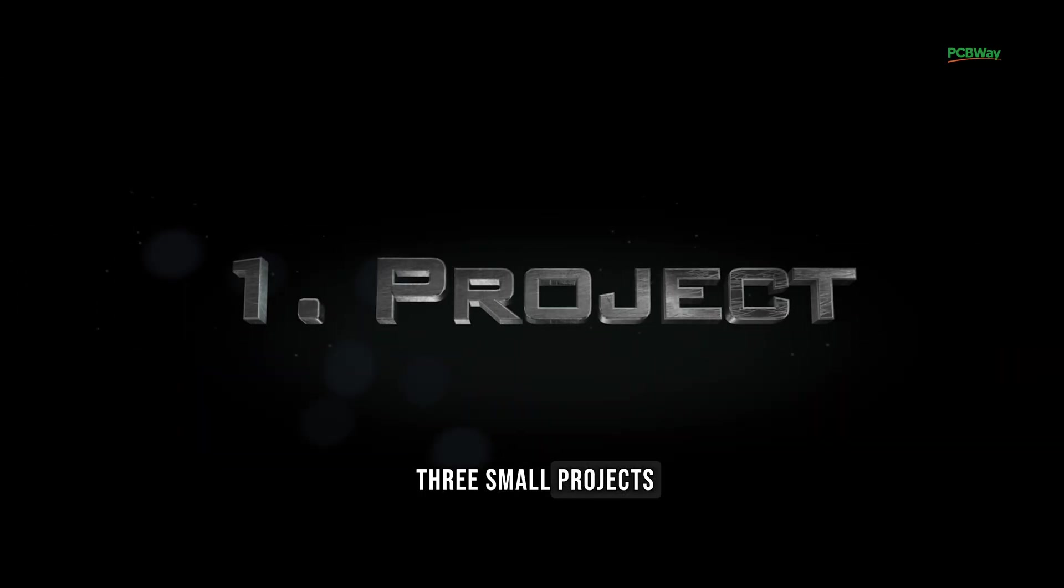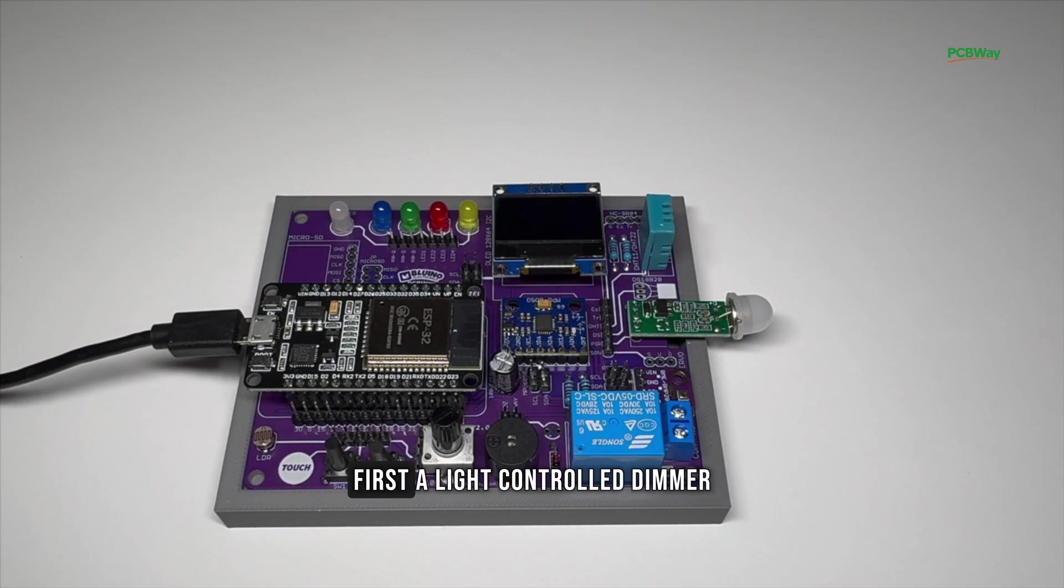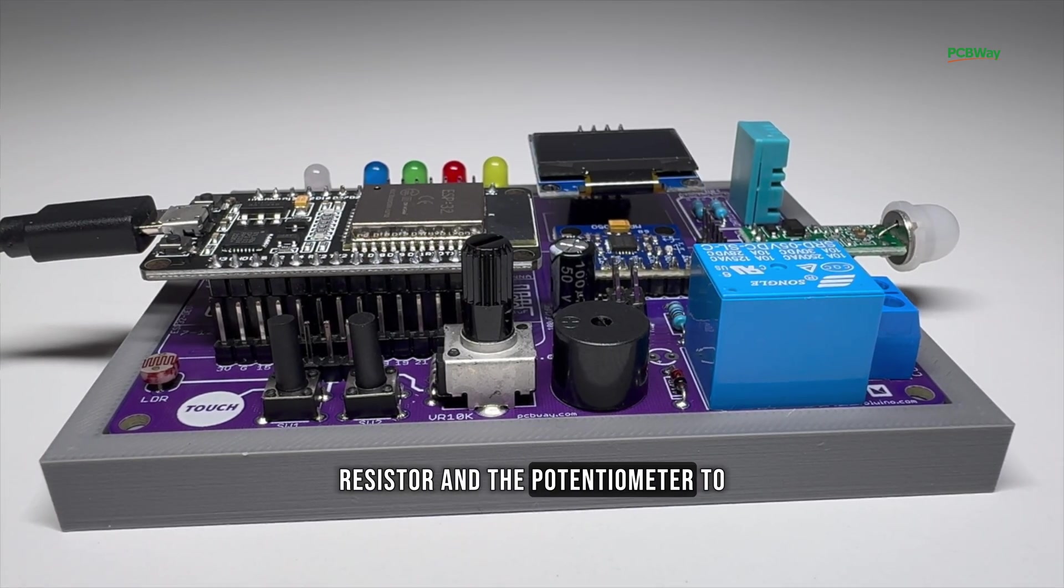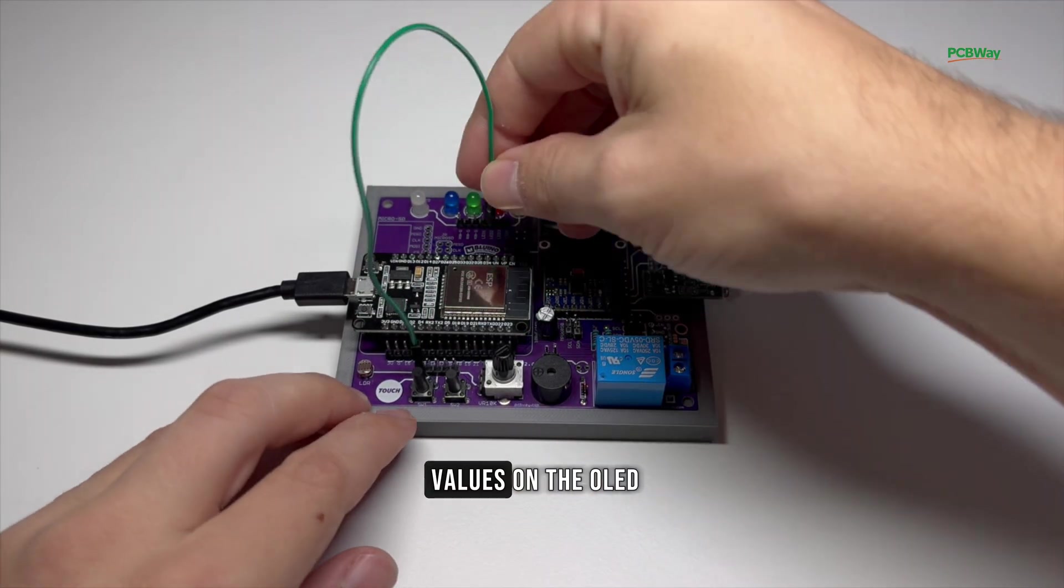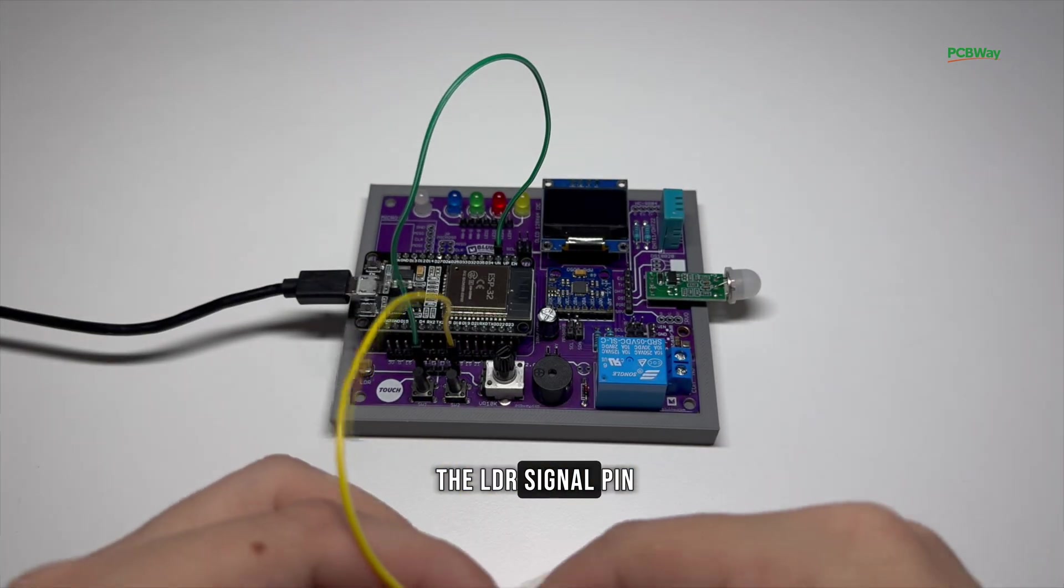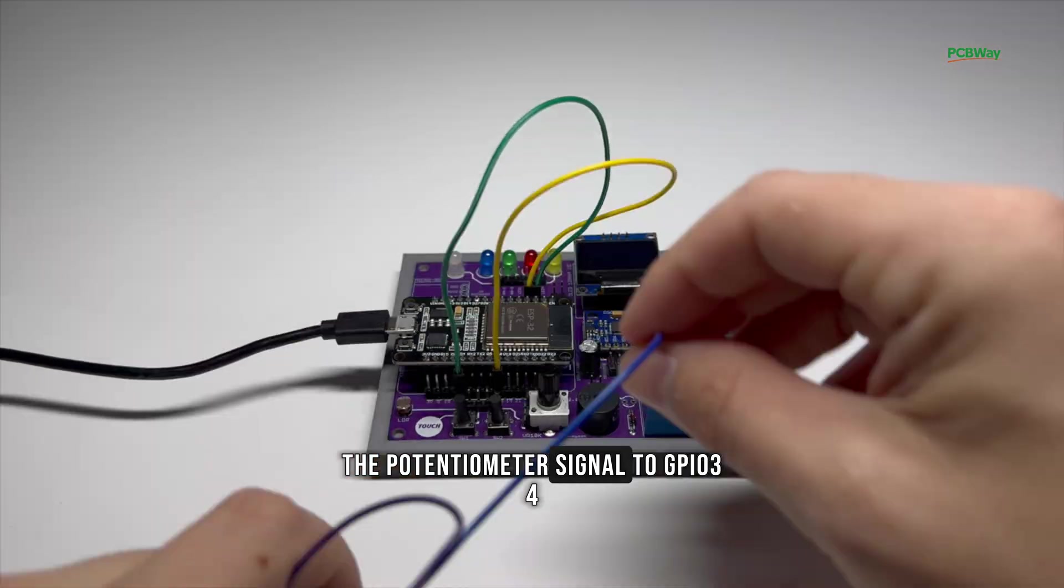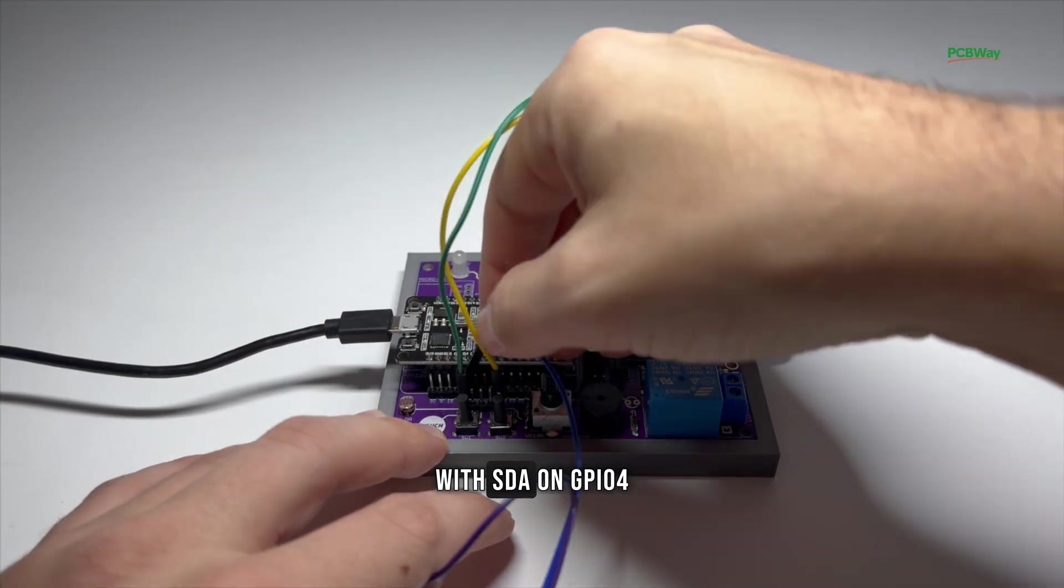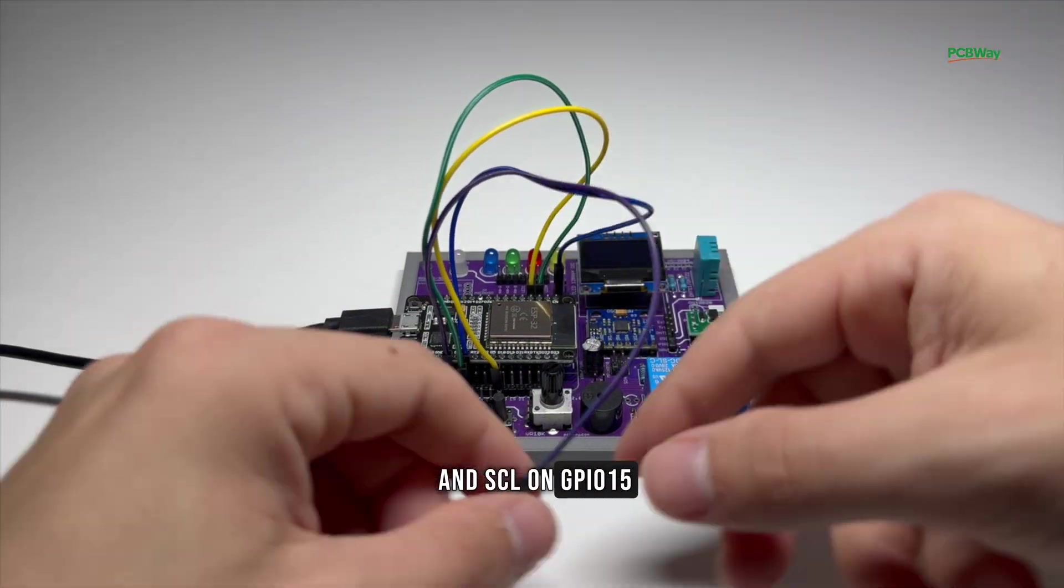Now let's look at three small projects you can run directly on this board. First, a light controlled dimmer. Here you use the photoresistor and the potentiometer to control the brightness of the LEDs, and you show the values on the OLED. For this project, connect the LDR signal pin to GPIO36, the potentiometer signal to GPIO34, and the OLED to the I2C bus with SDA on GPIO4 and SCL on GPIO15.